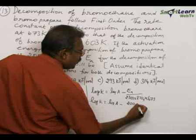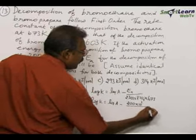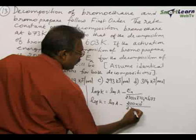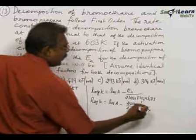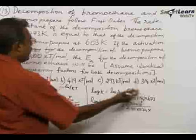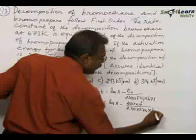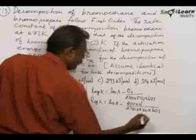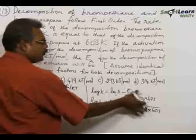200 kilojoule convert into joule, that is times 10 to the 3, divided by 2.303 times 8.314 into temperature. This time the temperature here given as 603 Kelvin, 603 Kelvin. And since these two are identical, these two must be equal.